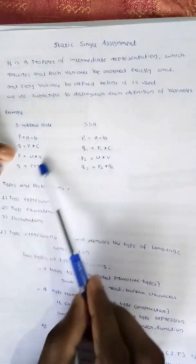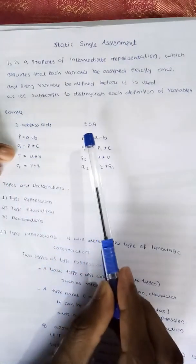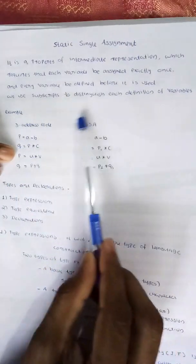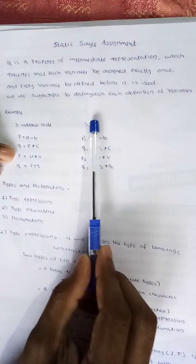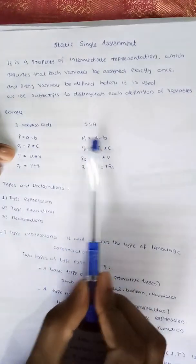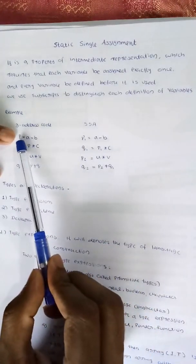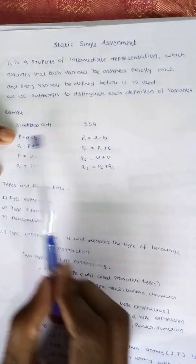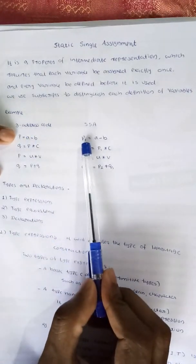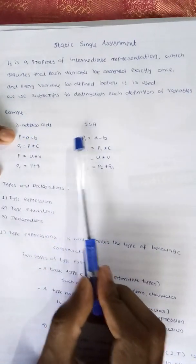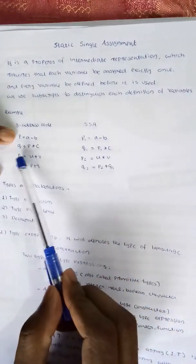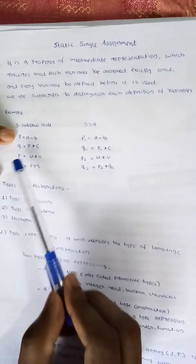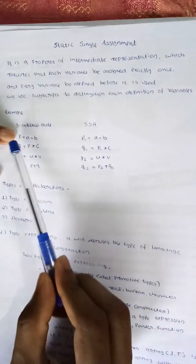Here we have a static single assignment code. Here we have P, where P1 is equal to A minus B, because there are multiple uses of P.